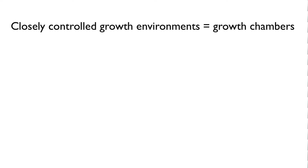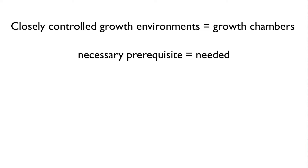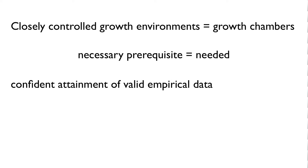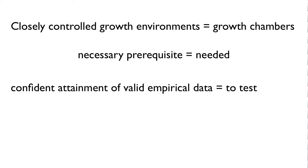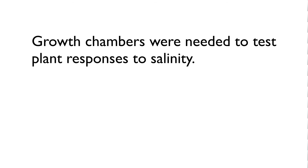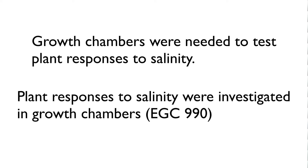Closely controlled growth environments are simply growth chambers. Necessary prerequisite is redundant since a prerequisite is something necessary — we can just say 'needed.' Confident attainment of valid empirical data can be more simply stated as 'to test' or 'to investigate.' Putting it all together, we get: 'Growth chambers were needed to test plant responses to salinity.' Or, in a methods description, we might say: 'Plant responses to salinity were investigated in growth chambers,' followed by the manufacturer name and model number.